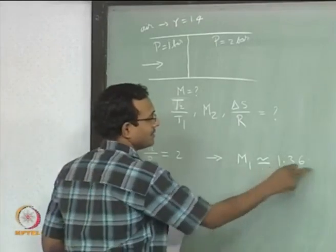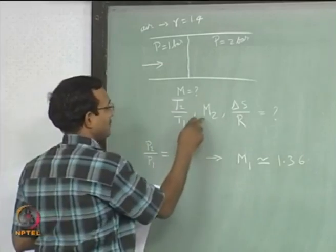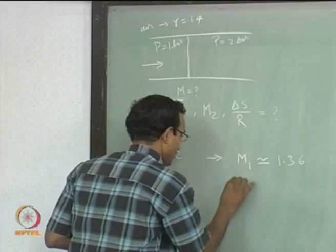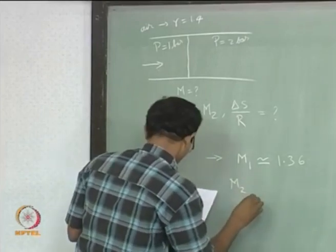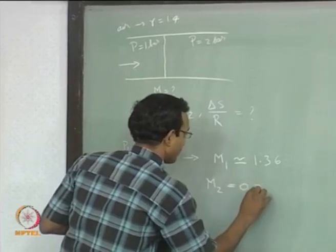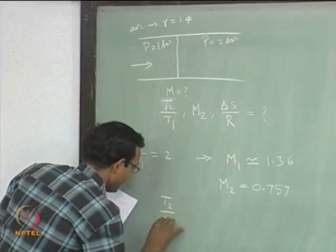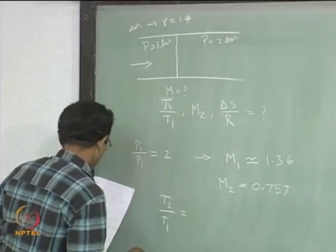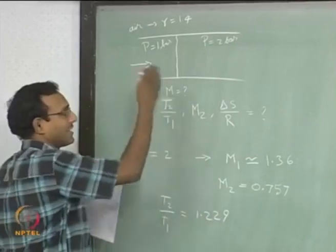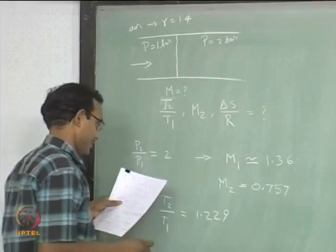So now we know the shock Mach number. For the other properties, M2 is just the next column in the same row — that value happens to be 0.757. And if I read out T2/T1 from there, T2/T1 is 1.229. So I am getting answers directly. That is why I said it is a very simple problem.